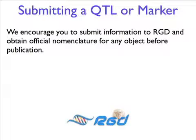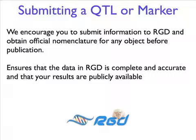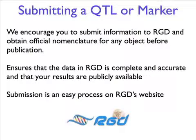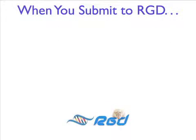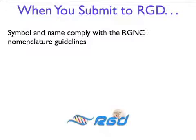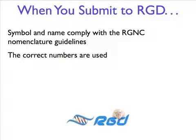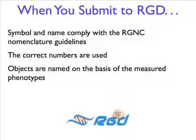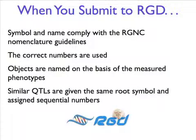We strongly encourage our users to submit their data for strains, gene variants, QTLs, and SSLPs to RGD. This ensures that the data in RGD is complete and accurate and that your results are publicly available as required by many funding agencies. Submitting data is a very simple process. When you submit a QTL directly to RGD, RGD makes sure the symbol and name comply with the RGNC nomenclature guidelines and that the correct numbers are used. We make sure that they are named on the basis of the measured phenotypes, and similar QTLs are given the same root symbol with sequential numbers assigned. We assign RGD IDs to submitted QTLs and send you these IDs so that you can use them in your publications.